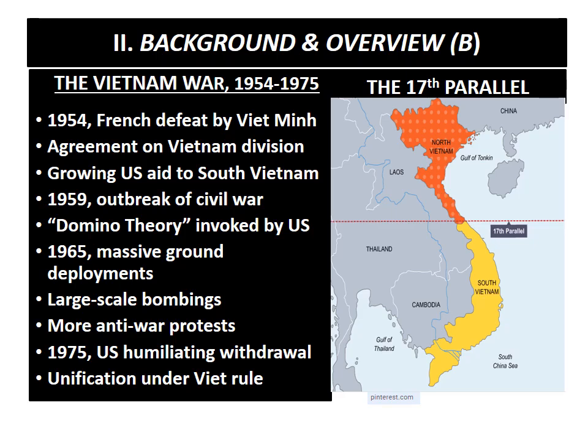This concludes part one, where we briefly examined the domino theory and how it impacted American interventionism in both the Vietnam War and the Korean War, and how that intervention unfolded for the United States. In part two, we shall see how the domino theory was used by the US political establishment to justify military intervention in foreign countries starting with Southeast Asia, and whether that theory was a success or a failure when it comes to US foreign policy. Thank you, and I hope you stay safe.